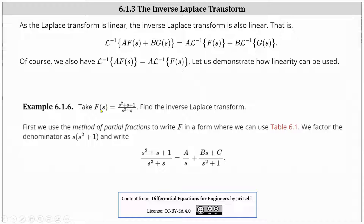For the next example, we are given F(s) equals (s² + s + 1) all divided by (s³ + s), and we are asked to find the inverse Laplace transform. We first use the method of partial fraction decomposition to write F in a form where we can use table 6.1. This means we begin by factoring the denominator as s times (s² + 1). Notice we have a linear factor and a quadratic factor, so we write F(s) as A/s plus (Bs + C)/(s² + 1), where a linear factor has a constant numerator and a quadratic factor has a linear numerator.